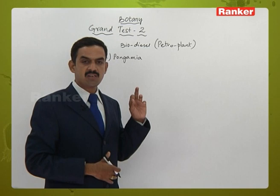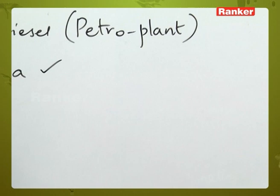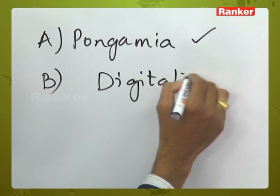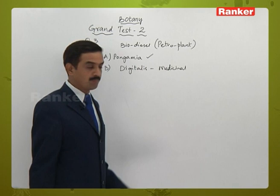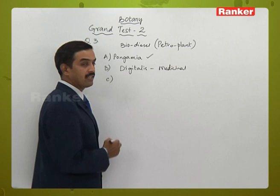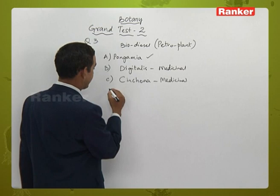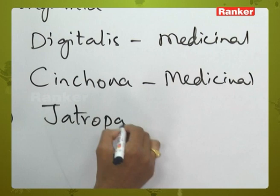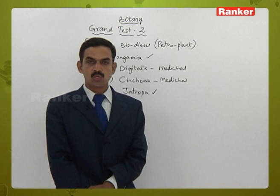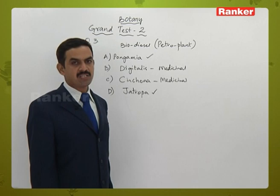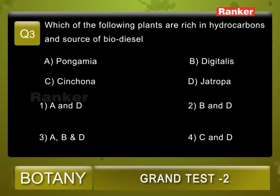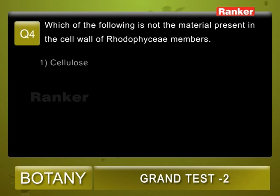Pongamia, also called the Deris plant, belongs to the Fabaceae family and produces biodiesel — so A is correct. Digitalis is a medicinal plant, not a biodiesel-yielding plant — incorrect. Cinchona is also medicinal, not a biodiesel plant — incorrect. Jatropha belongs to the Euphorbiaceae family, yields diesel, contains hydrocarbons, and is a petro plant — so D is correct. The correct options are A and D. Question number three: the correct answer is one.